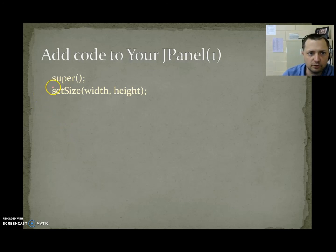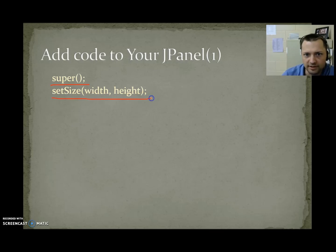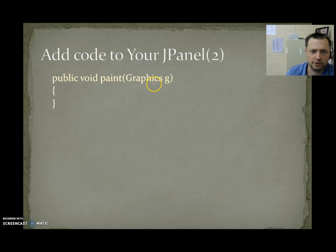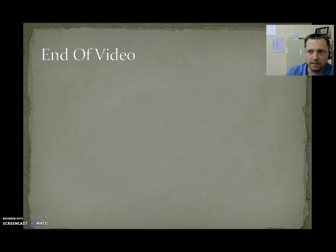Code to add to your panel: call super(), set the width and height in your constructor, and add the public void paint(Graphics g) method — this is where you'll actually do your drawing. That's it for this section. Next, we're going to do an example of drawing to the screen.